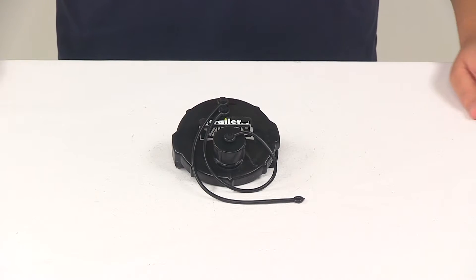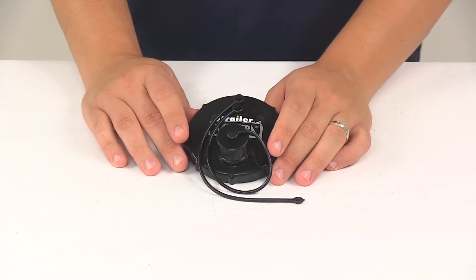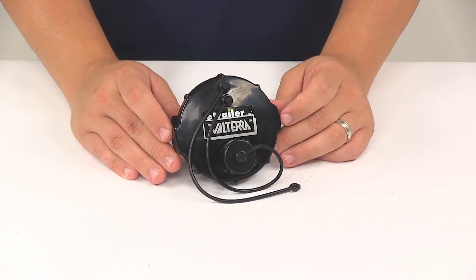Today we're going to be taking a look at the Valterra RV waste valve cap. This cap is made from a durable black plastic construction.